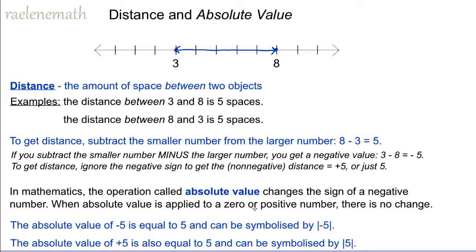Therefore, when we take the absolute value of negative five, we ignore the negative and we get an answer of five. Meanwhile, the absolute value of positive five is also equal to five, because when absolute value is applied to zero or a positive number, there is no change in the sign of that value. We use this vertical bracket to represent the absolute value symbol.